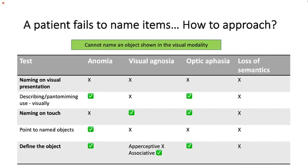When approaching a patient who cannot name an object shown visually, there are four possibilities: anomia, visual agnosia, optic aphasia (naming difficulty limited to the visual modality), or loss of semantics. In anomia — a language disorder — the person cannot retrieve names in any modality, but can describe the use and point to named objects. In visual agnosia, the person cannot name, cannot describe use, cannot point to a named object visually, but can recognize by touch. In loss of semantics, all modalities are affected and the person fails on factual questions about object knowledge.